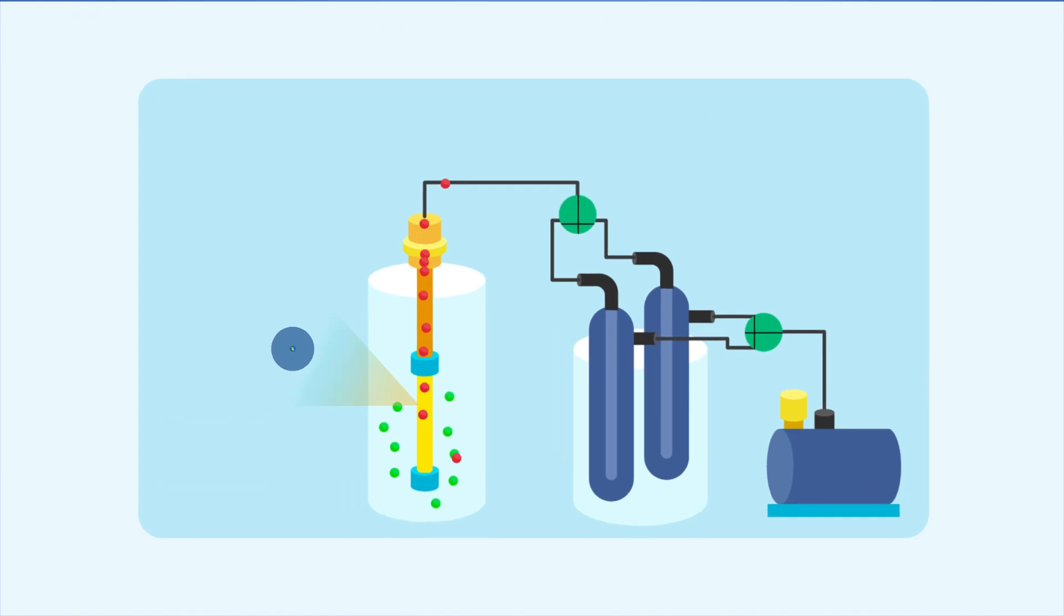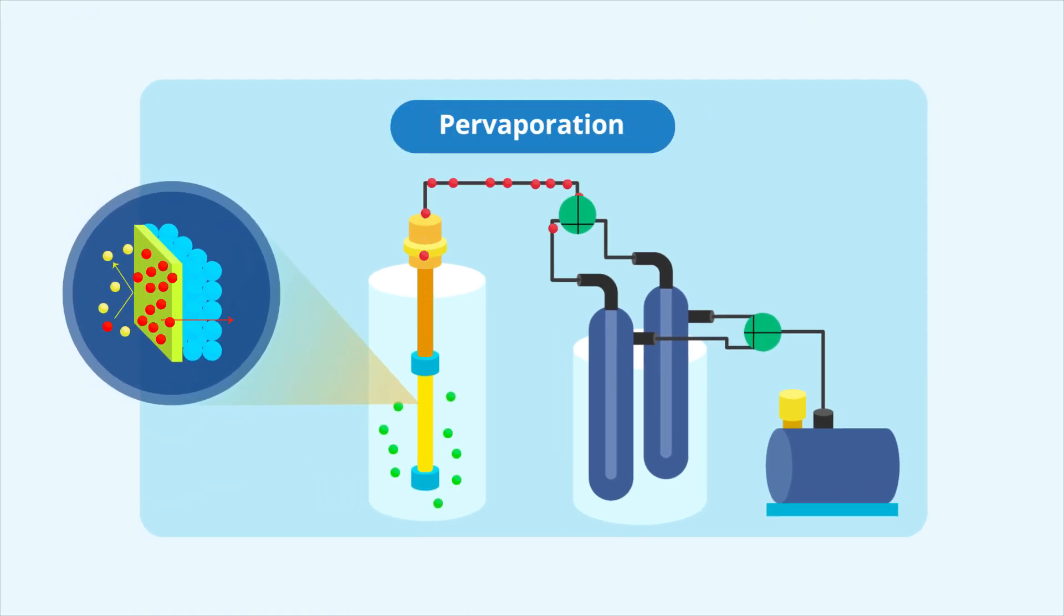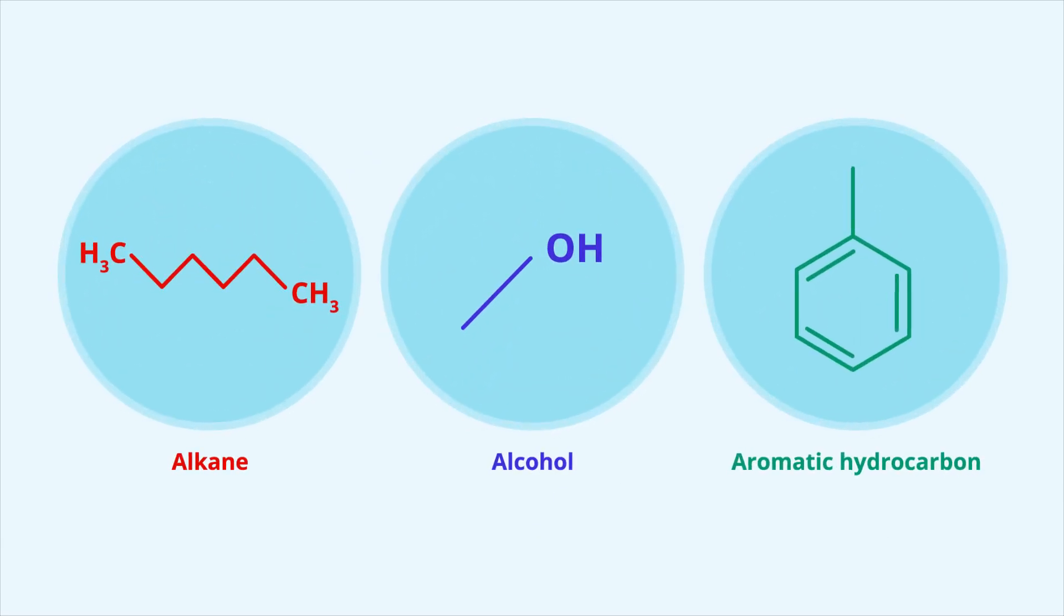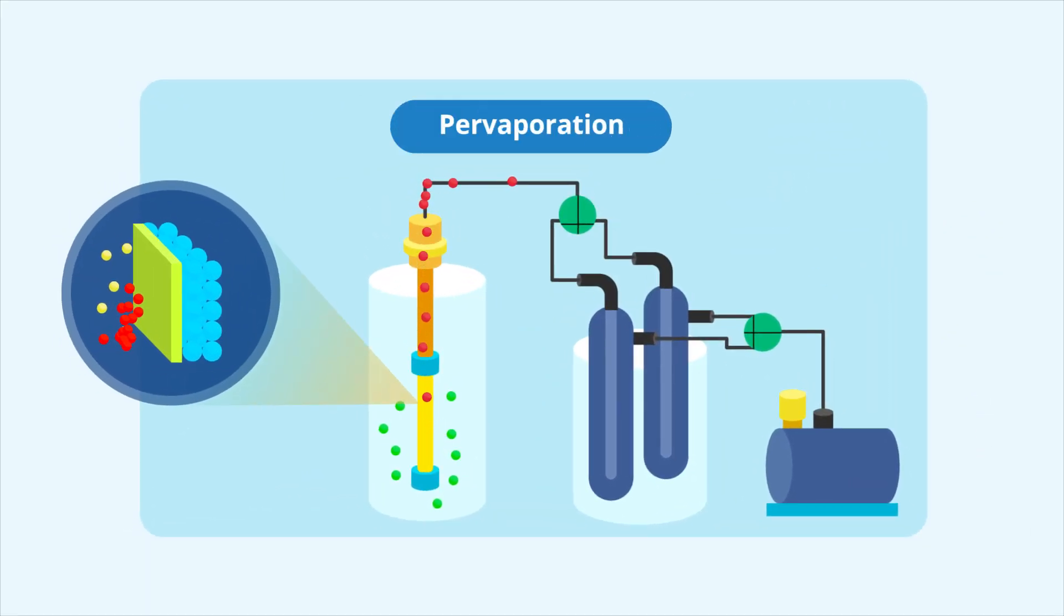The researchers analyzed the permeability of the membranes for different organic compounds, such as alcohols, alkanes, and aromatic hydrocarbons, in unary pervaporation tests. Then, they conducted binary pervaporation experiments to test the capabilities of the membranes when separating various alcohols and aromatic compounds from alkanes.